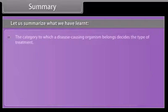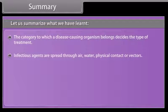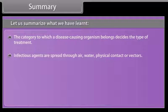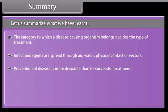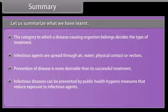The category to which a disease-causing organism belongs decides the type of treatment. Infectious agents are spread through air, water, physical contact or vectors. Prevention of disease is more desirable than its successful treatment. Infectious diseases can be prevented by public health hygiene measures that reduce exposure to infectious agents.